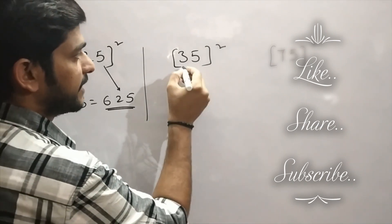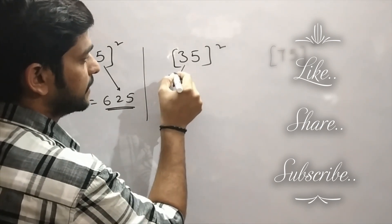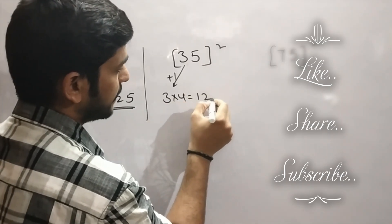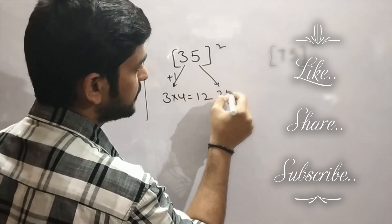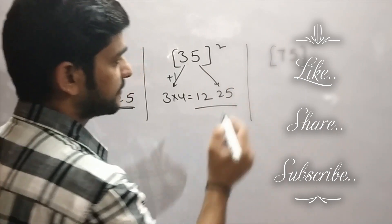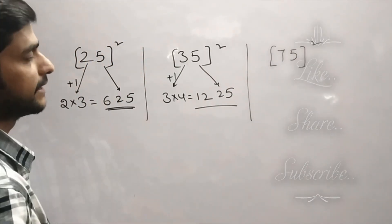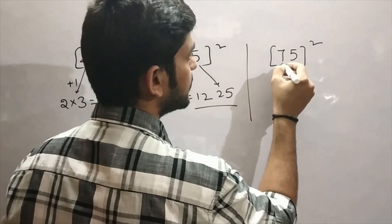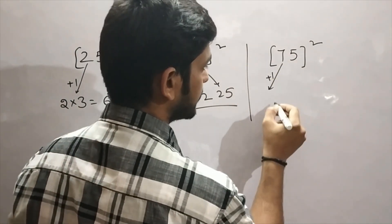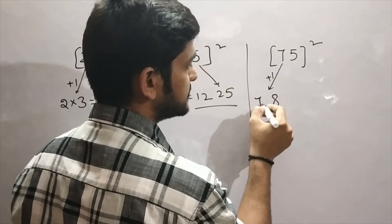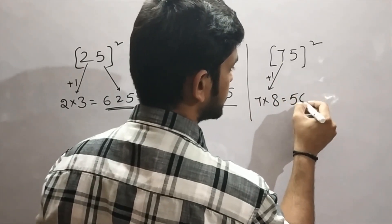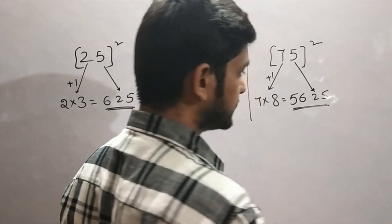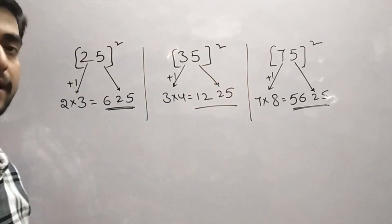Consider the number 35. Take this 3, increasing by 1. There you will get 3 x 4, which is 12. And 5 squared will be 25. So 1225 is the square of 35. Do the same process for 75. Take 7, increasing by 1 — here you are getting 8. 7 x 8 is 56. And 5 squared will be 25. So 5625 is the square of 75.